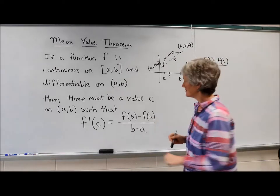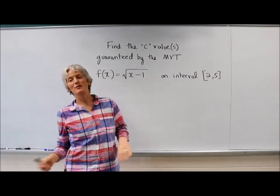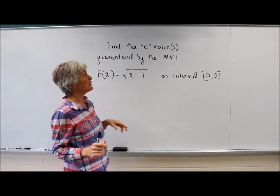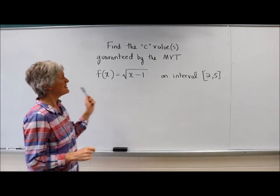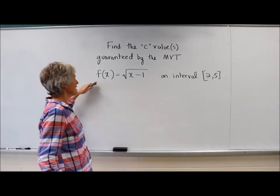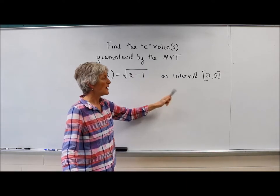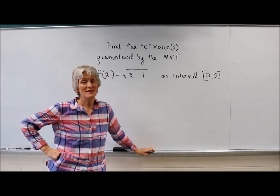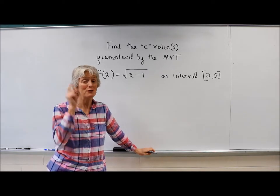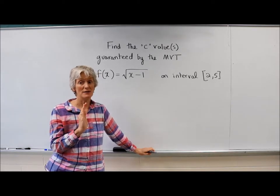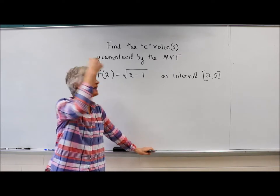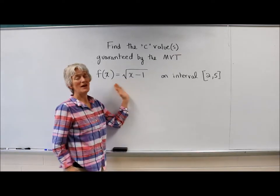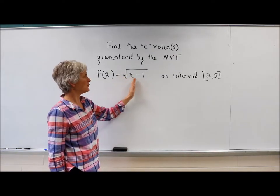Let's try one of these mean value theorem problems. So I want to find the c value or values that are guaranteed by the mean value theorem, given that my function is f(x) = √(x-1) on the interval [2,5]. So you know what we need to do first? We need to make sure that the requirements of the mean value theorem are first satisfied. In other words, the function has to be continuous on the interval and it has to be differentiable. So particularly if I'm looking at a square root here, we want to make sure that we're okay.